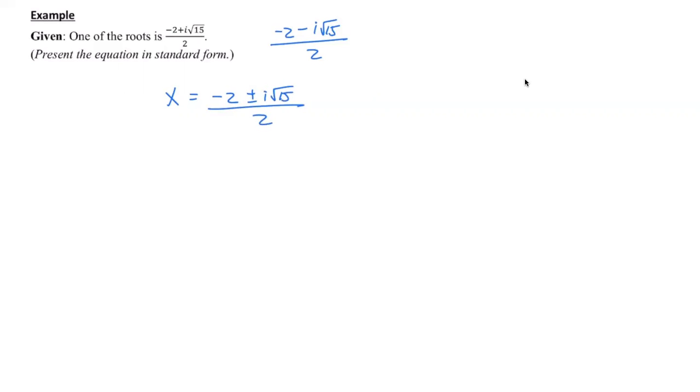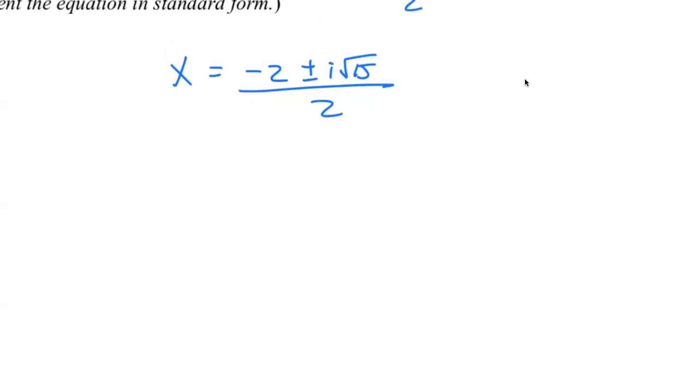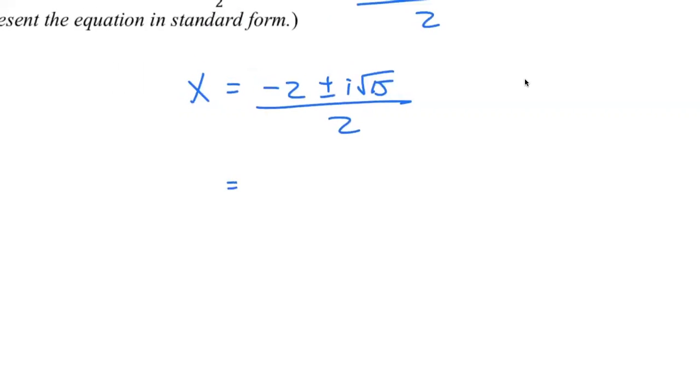Just like the previous example, we are just walking backward. How? We are going to eventually make the right-hand side equal to 0, one by one, one step at a time. The first thing we do is multiply 2 on both sides so that we no longer have a fraction.